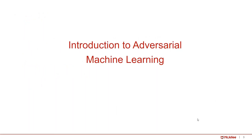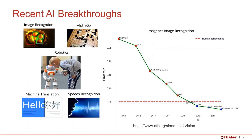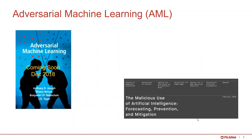First, let's give an introduction about adversarial machine learning. As you know, machine learning and artificial intelligence have had breakthroughs in recent years, including in image recognition, AlphaGo, robotics, machine translation, and speech recognition. For image net recognition, especially after 2015, the performance of AI and machine learning has exceeded human performance. With all these technologies involved, we also need to look into the vulnerabilities of this technology in an adversarial setting. That's what adversarial machine learning is about.